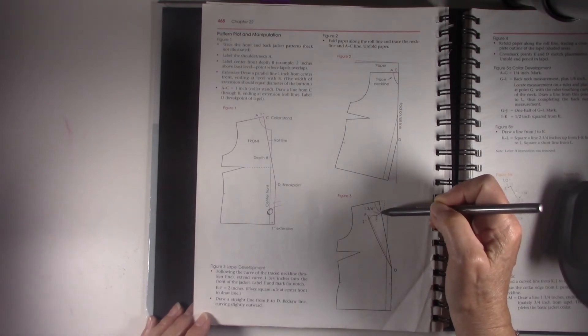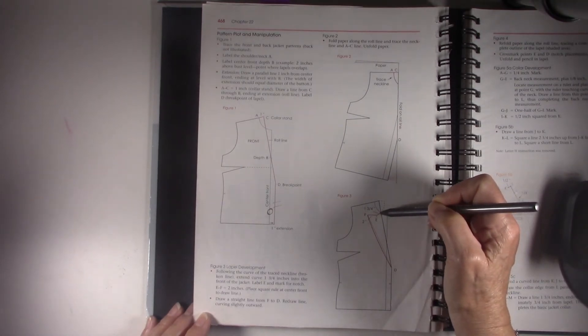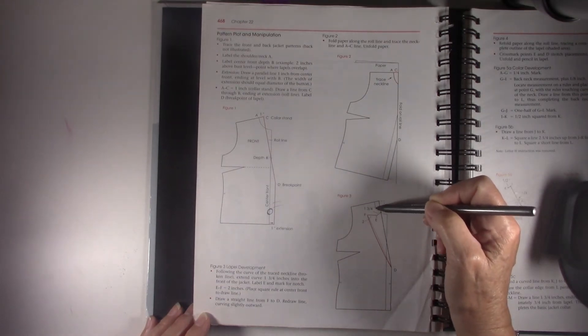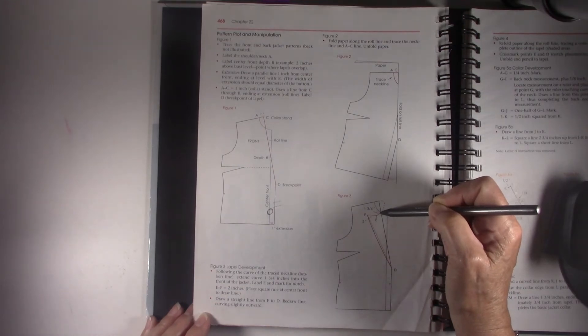So now what you've done is you've kind of decided where that lapel is going to be, where that lower lapel is going to be, and whatever is left over there becomes part of your collar pattern.